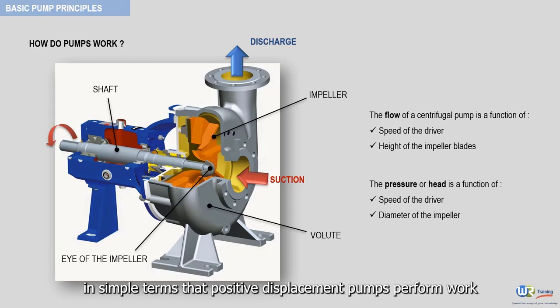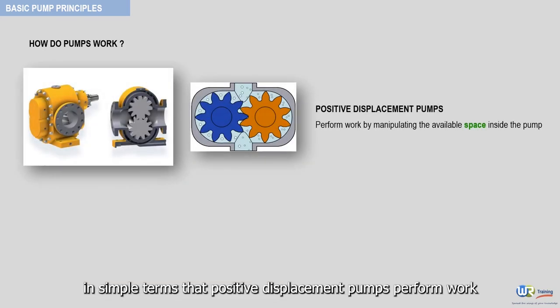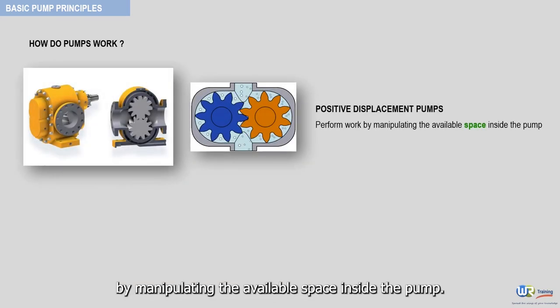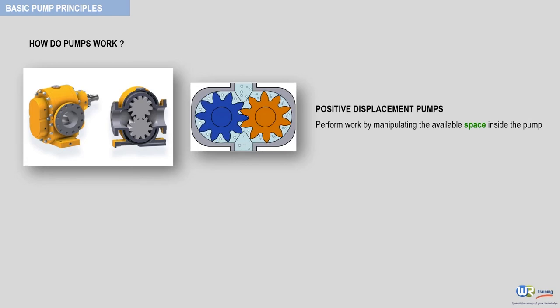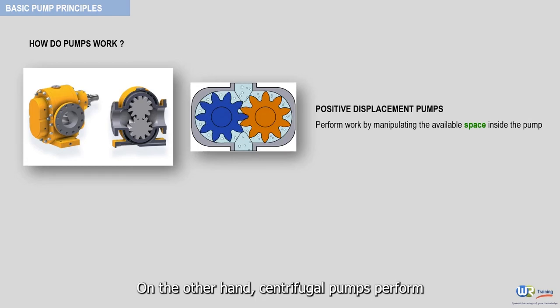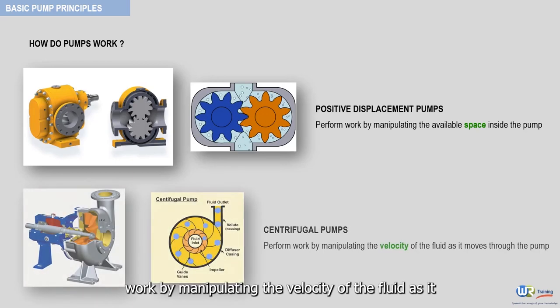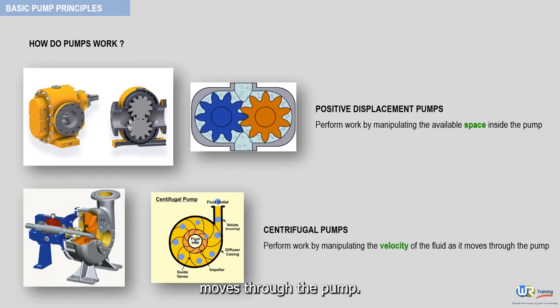To sum up, we could say in simple terms that positive displacement pumps perform work by manipulating the available space inside the pump. On the other hand, centrifugal pumps perform work by manipulating the velocity of the fluid as it moves through the pump.